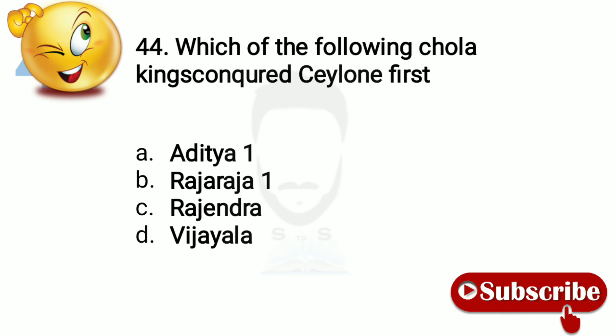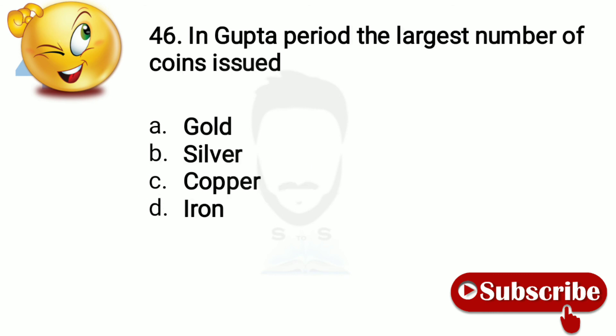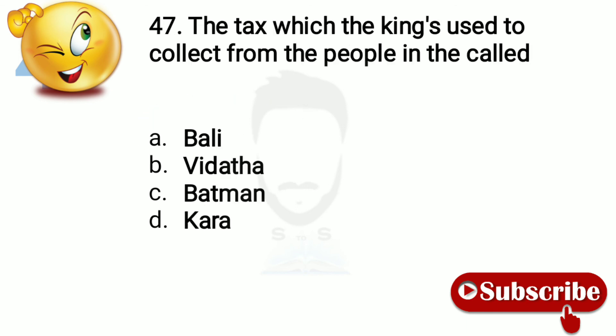Question 43: Which of the following Chola kings conquered Ceylon first? Option number B, Raja Raja I. Question 44: Most of the Chola temples were dedicated to Lord Shiva. Question 45: In the Gupta period the largest number of coins issued were gold. Question 46: The tax which kings used to collect from the people is called Bali.